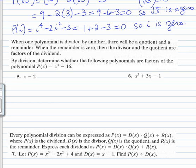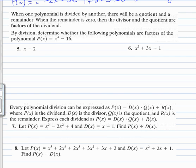In number 5, we are asked to use division to determine whether the following polynomial is a factor of the polynomial or not. So for number 5, we'll use synthetic division. We put the opposite of this number here, and we put the coefficients of the polynomial here.